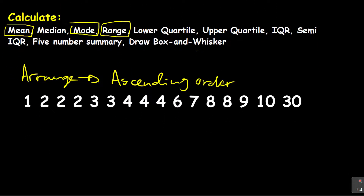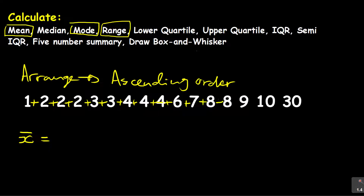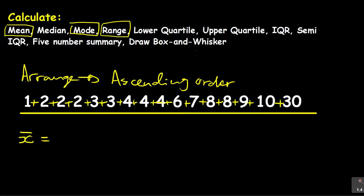The first question says calculate the mean. How do you calculate the mean? Your calculator will come in handy here. The mean, usually given as x-bar, is equal to the sum of all these numbers divided by the total number of values. There are 16 values, so you divide by 16.